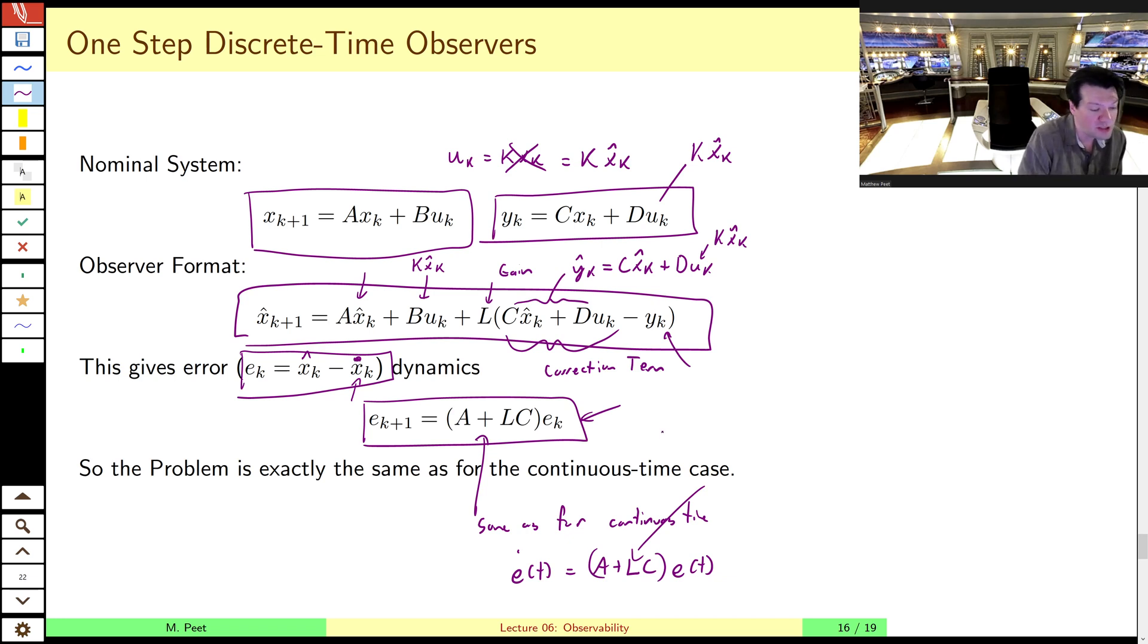However, all of the results that we have on the previous parts a and b can now be applied to this case. Although we haven't defined observability and detectability in the discrete time case explicitly. But you can take my word for it that they're more or less the same. So we want the a plus lc to be Schur. And Schur as in the name Schur, not we're sure that they're stable or something like that. All right, so we design our controller such that a plus bk is Schur from the previous lecture. And now we want to choose l such that a plus lc is also Schur.